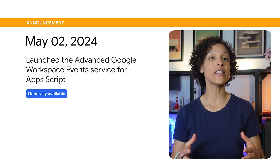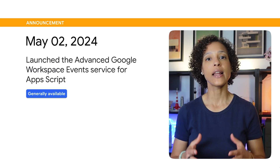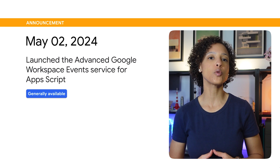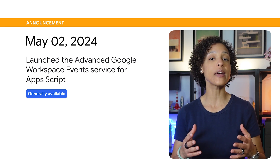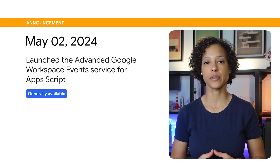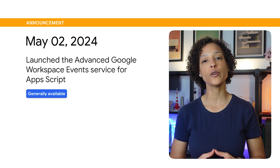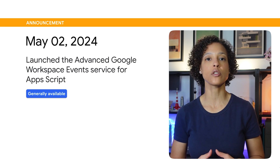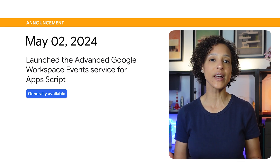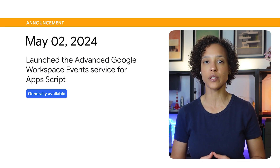The Advanced Google Workspace Events service lets you use the Google Workspace Events API in Apps Script. This API lets you subscribe to Google Workspace resources so that you receive relevant events that you're interested in. Events represent changes to resources, such as when resources are created, updated, or deleted.